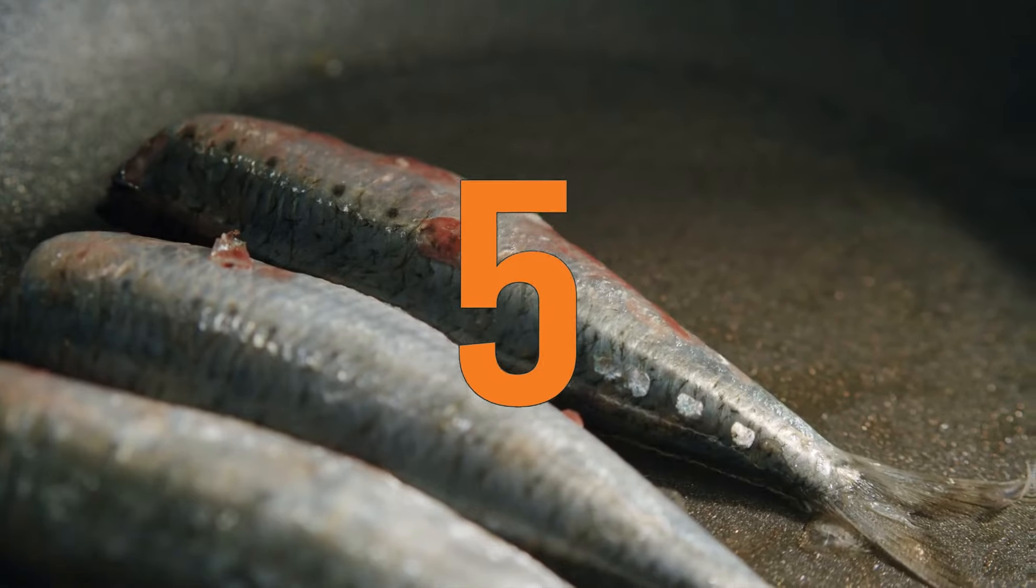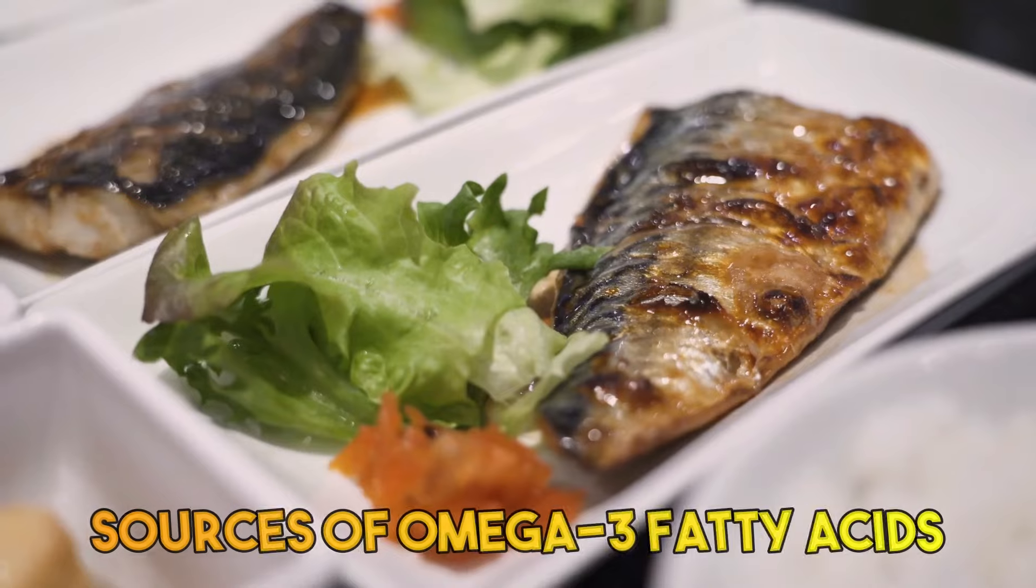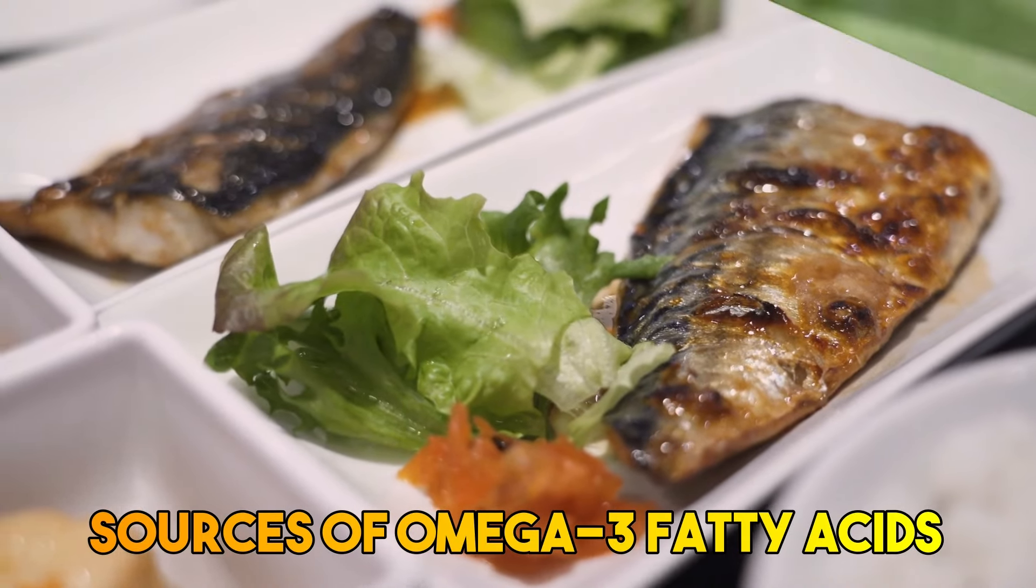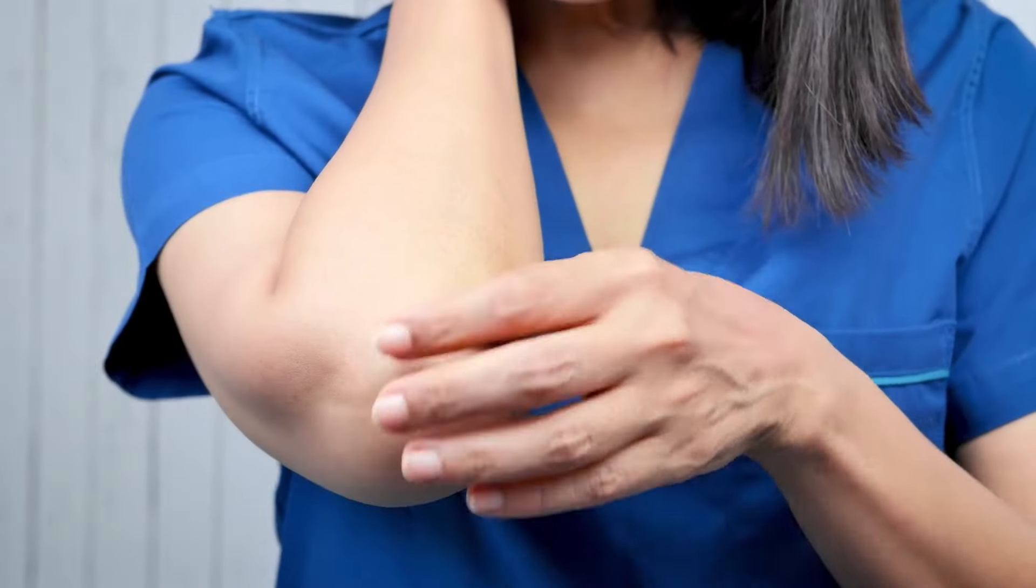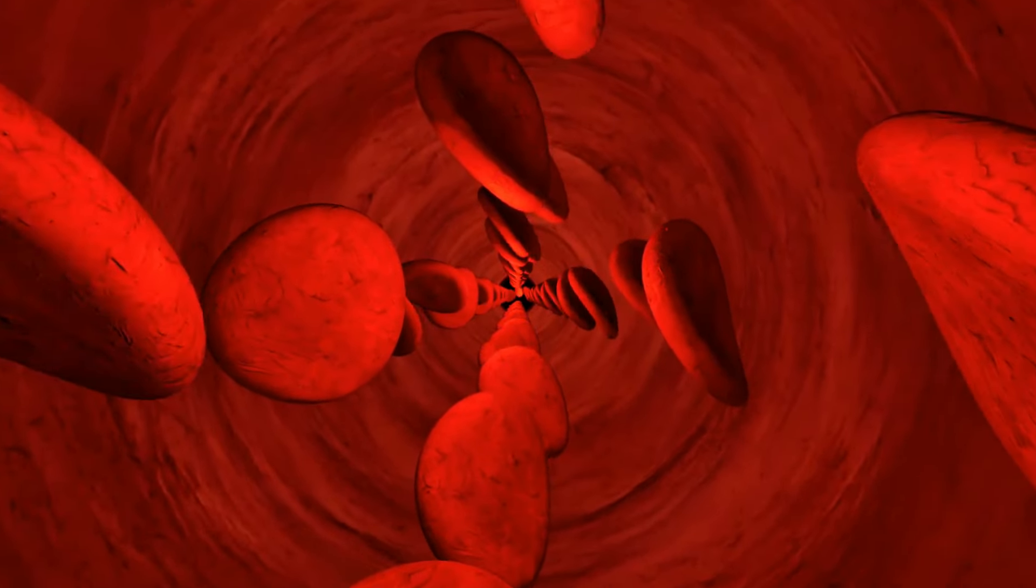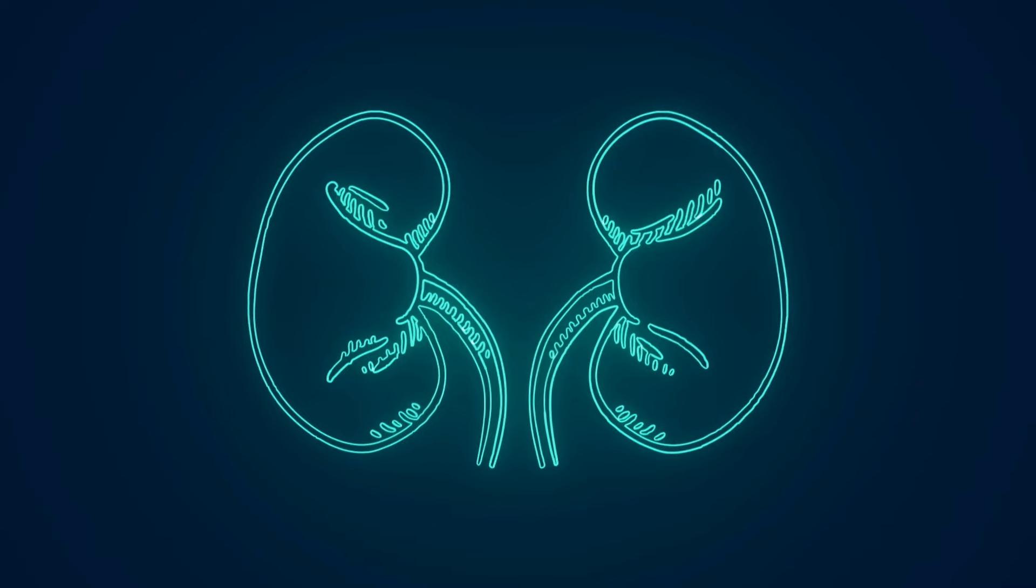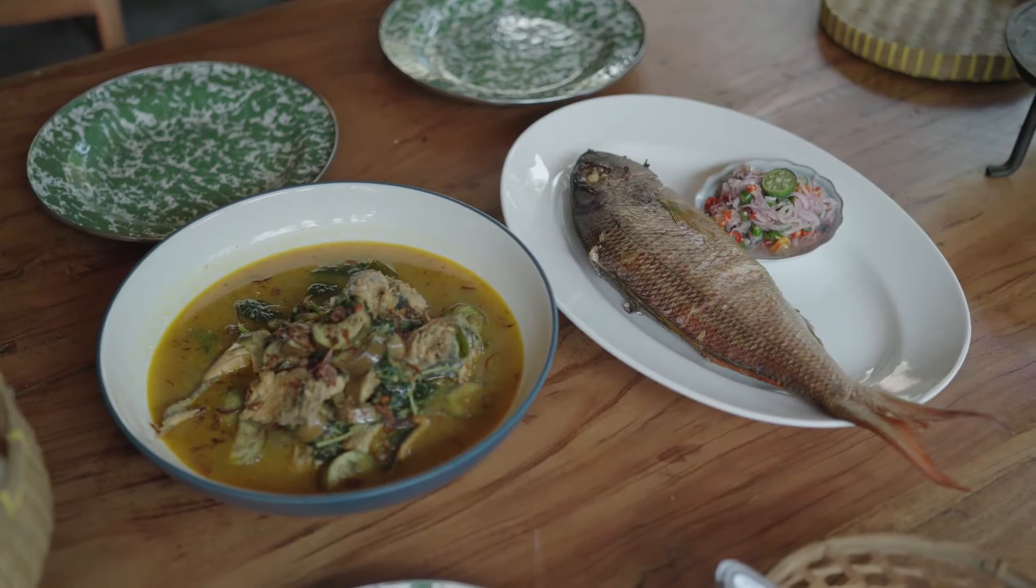Salmon, sardines, and mackerel are excellent sources of omega-3 fatty acids. These healthy fats have been shown to reduce inflammation and improve blood flow, both of which benefit kidney health. Aim for two to three servings of fatty fish per week.